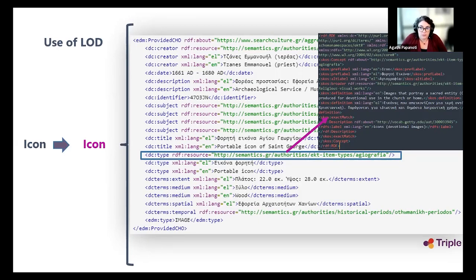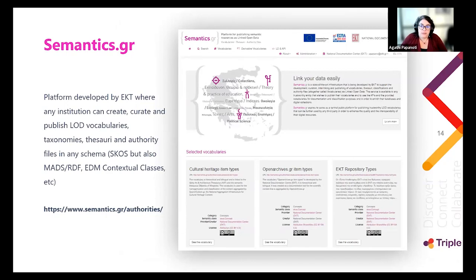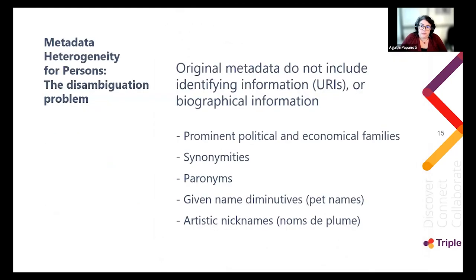Each time the unique URI identifier is included in a metadata record, it also carries with it all the relevant information of that term, giving a better, more complete context for the documented item. The vocabularies were created in semantics.gr, a state-of-the-art multifunctional platform where one can create, curate, and publish linked open data vocabularies, thesauri, and authority files in any schema. The platform was created by EKT.